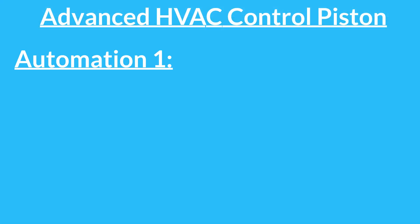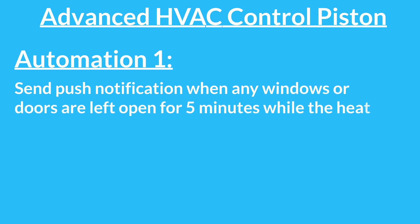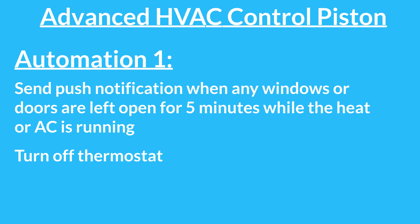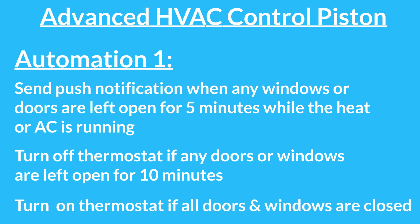The first automation will monitor the state of door and window contact sensors, and if your heat or air conditioning is running for 5 minutes, the piston will send a push notification to your phone letting you know you might want to close your windows or doors to help prevent wasting energy. If after 10 minutes of your heat or AC running with the windows or doors not closed, your thermostat will turn off. The piston will then monitor the contact sensors that were opened and if all of your doors and windows are closed, will return the thermostat to its original operating state.